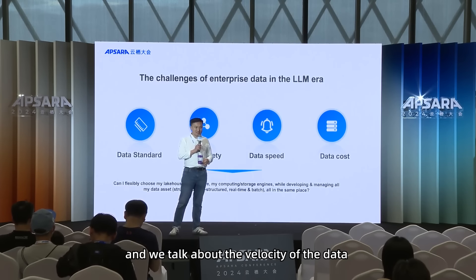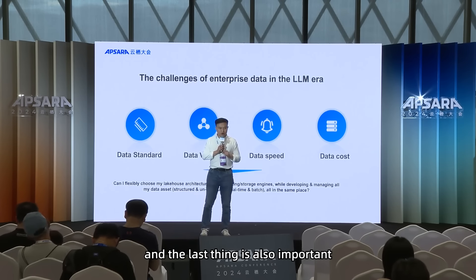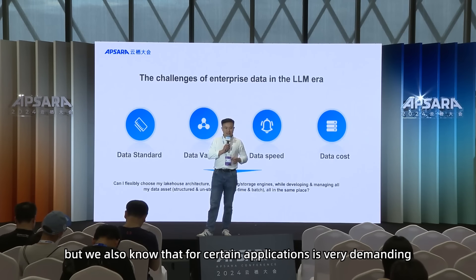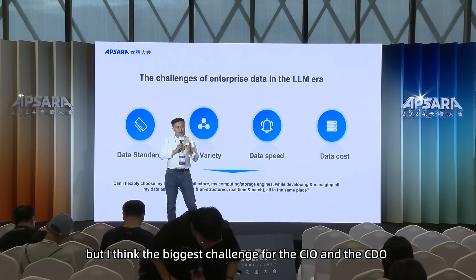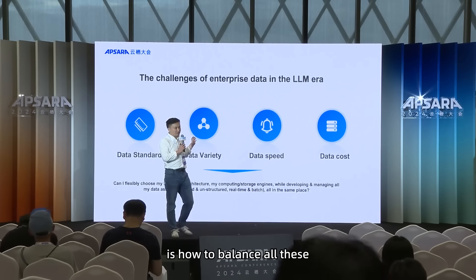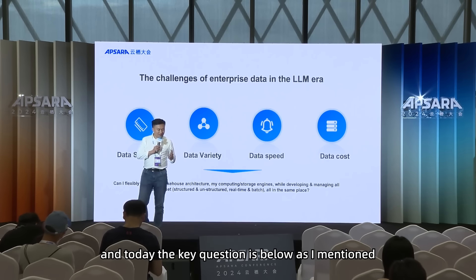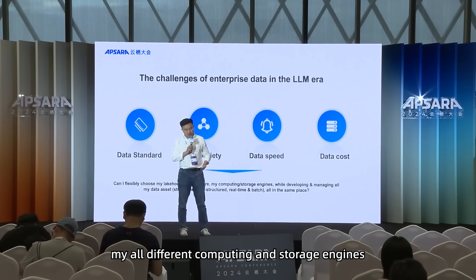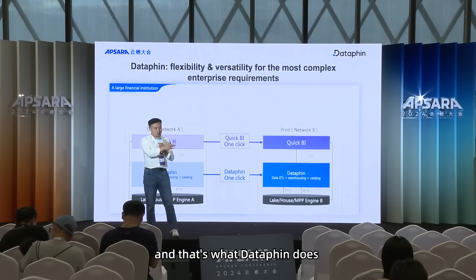We also talk about the velocity of data — sometimes we need to deal with stream data, sometimes with batch data. And cost is also important: OSS and some storage is very cost effective, but for certain applications it's very demanding and we need to sacrifice cost for high performance. The biggest challenge for the CIO and CDO is how to balance all this. The key question is: can I flexibly choose my Lake House architecture, my different computing and storage engines, and still develop and manage my data assets in a unified way, all in the same place? That's what DataFin does.